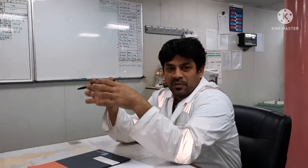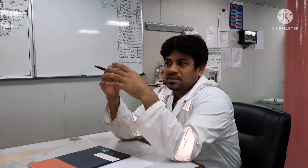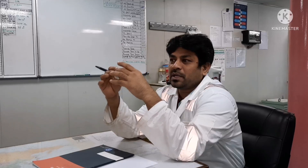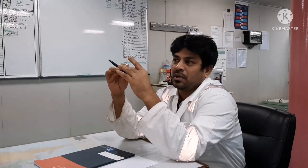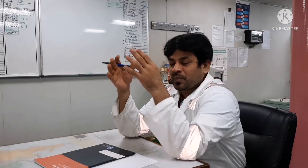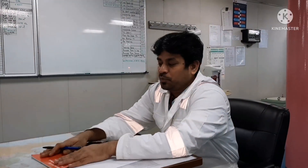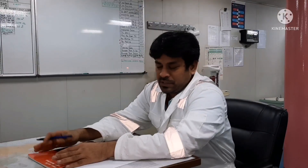The record book information should be entered as whatever you receive on paper. For example, if you are taking any bunker, that bunker should be recorded in this book properly. How we are going to do that, and what all information is available in this book, is what we would like to explain.